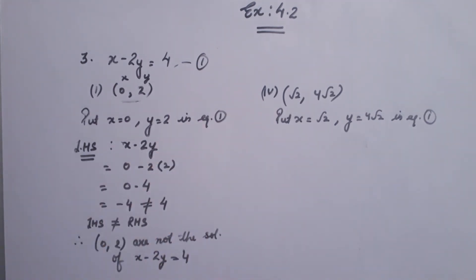x is equal to root 2, y is equal to 4 root 2. I am taking the left hand side again. That is x minus 2y. Put the value in x is equal to root 2 and root 2. Then, x is equal to root 2 with 4 root 2.